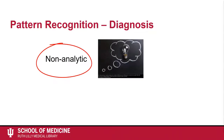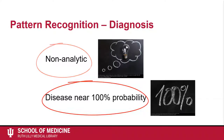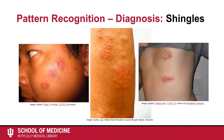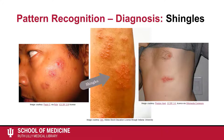Diagnosis through pattern recognition is a non-analytic approach that clinicians use to recognize disorders they have seen many times before. After physical examination, the clinician determines that the probability the patient has the disorder is near 100%. One example of this might be shingles. A physician has likely seen the presentation of shingles many times before, and diagnosing the condition takes little to no analysis in order to be nearly 100% certain.